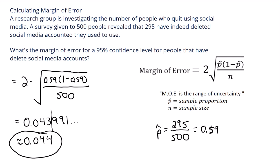Now what is the margin of error? That's just the range of uncertainty, so we're assuming, based on our situation here, that 59% of the people have deleted social media accounts. Well, how close are you? That would be within 0.044, or you could turn that into a percentage, which would be 4.4%.